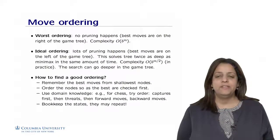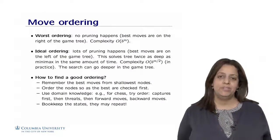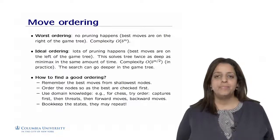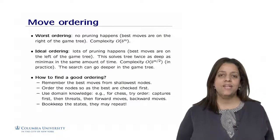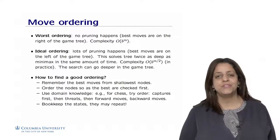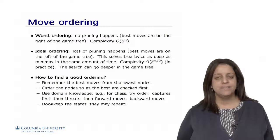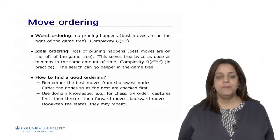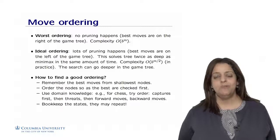The worst ordering for alpha-beta pruning is when no pruning can happen at all. This happens when the best moves are simply on the right side of the game tree, which means that we have to explore the bad moves first before reaching the best moves on the right. The complexity of alpha-beta pruning in this case is similar to minimax, which is big O of b to the m.